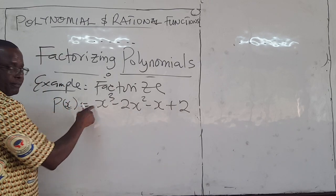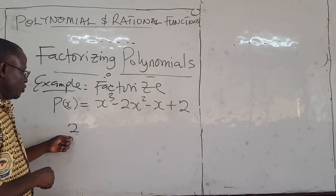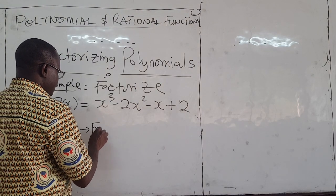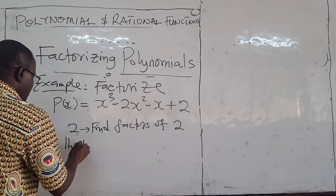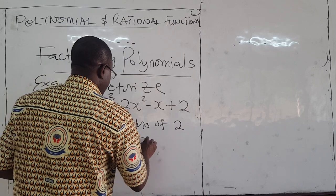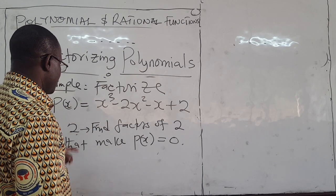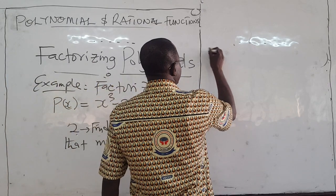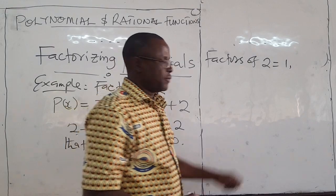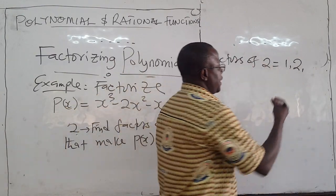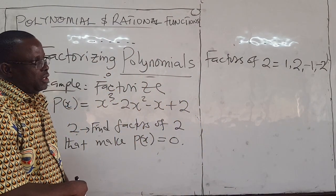Take 2, the constant, multiplied by 1, the leading coefficient. You have 2. That's what we do for quadratic equations. Now find the factors of 2. Factors of 2 that make p(x) go to zero. Factors of 2 are: 1, negative 1, 2, and negative 2. So we try them out.